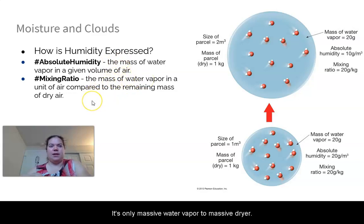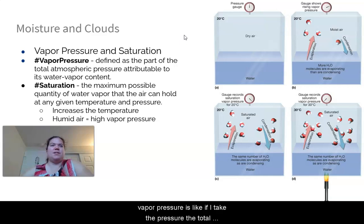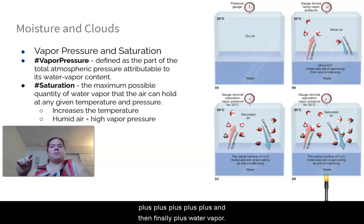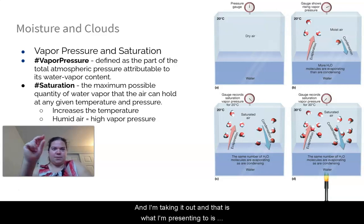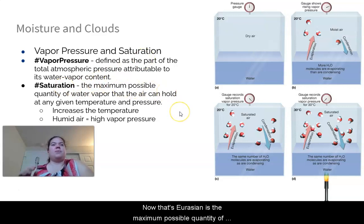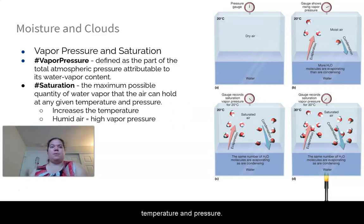Next we'll cover vapor pressure and saturation. Vapor pressure is the portion of total atmospheric pressure contributed by water vapor — taken out of the total pressure, which includes nitrogen, oxygen, argon, and more. Saturation is the maximum possible quantity of water vapor that air can hold at a given temperature and pressure — both temperature and pressure matter.